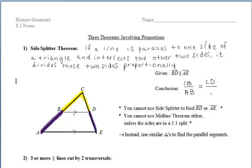As we'll see in an example a little bit later, you cannot use the side splitter to find those parallel sides BD or AE — I'll call those the bases. So you can't use side splitter for those two parallel sides. This may look like the midline theorem, but you can't use that unless the sides are in a one-to-one split, or if B and D were midpoints.